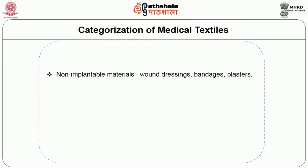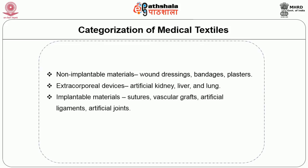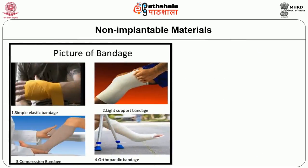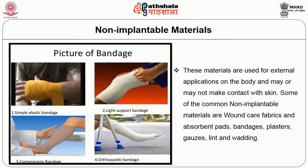Medical textiles are divided into four categories. The first is non-implantable materials such as wound dressings, bandages, and plasters. The next is extracorporeal devices like artificial kidney, liver, and lungs. The third is implantable materials like sutures, vascular grafts, artificial ligaments, and artificial joints. The last sector is healthcare and hygiene products like bedding, clothing, surgical gloves, cloths, and wipes.